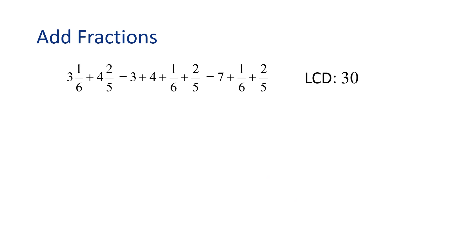Now we write equivalent fractions with 30 as the denominator. Let's start with 1 6th. We want to find an equivalent fraction with a denominator of 30. And since we know 6 times 5 is 30, we will multiply the fraction 1 6th by 5 over 5. 5 times 1 is 5 and 5 times 6 is 30, so 1 6th is equivalent to 5 30ths.